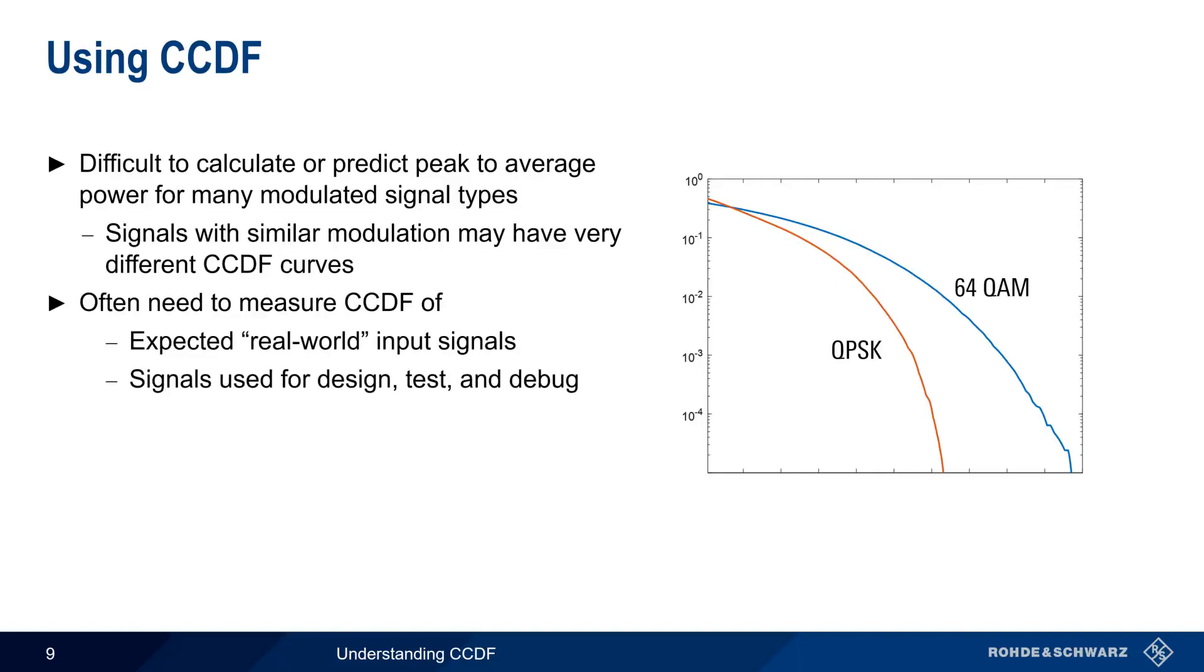Another way that CCDF can be used is by observing the changes in CCDF as the signal moves through various components. That is, we measure CCDF at both the device input and the device output and make note of any changes. Let's look at an example of this.